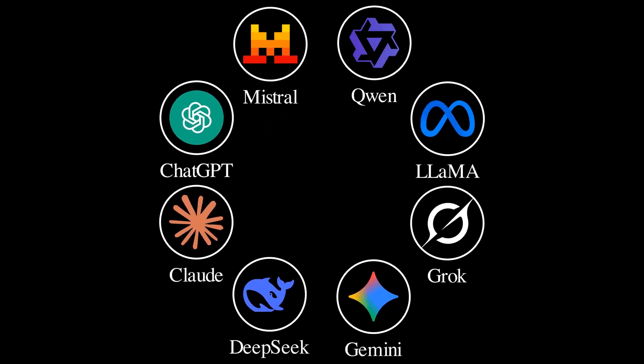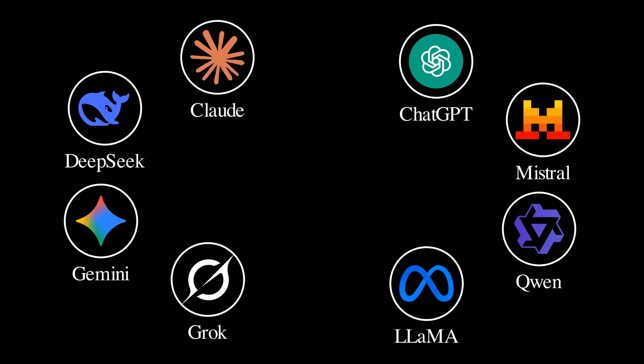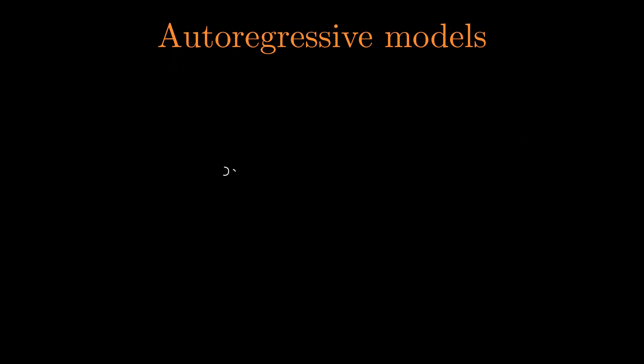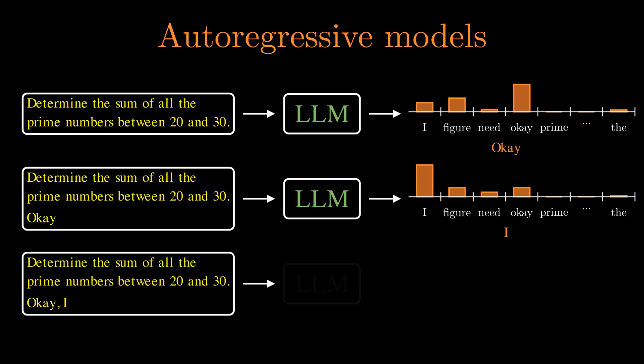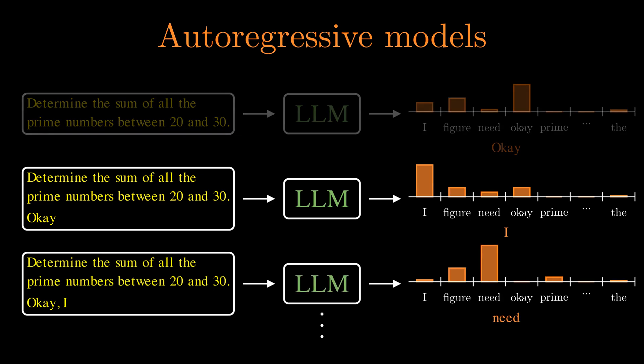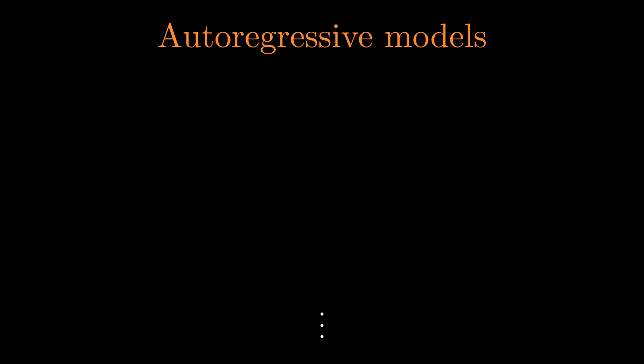Large language models are changing everything. Most leading models today are autoregressive models. This means they generate text by predicting one token at a time. Each new token feeds back to help predict the next one. While autoregressive models have been widely successful, they have several limitations.